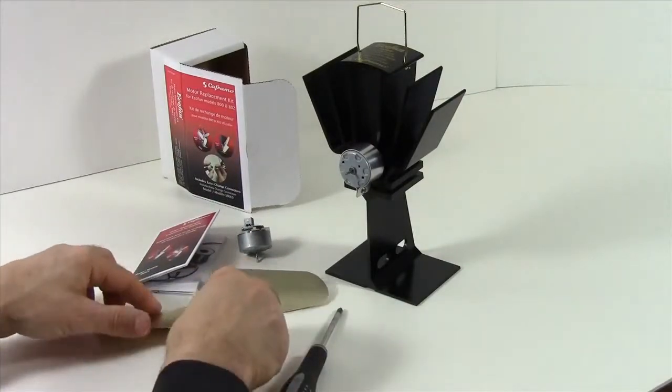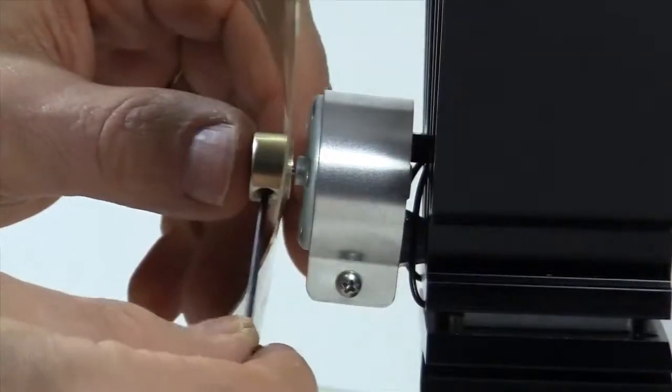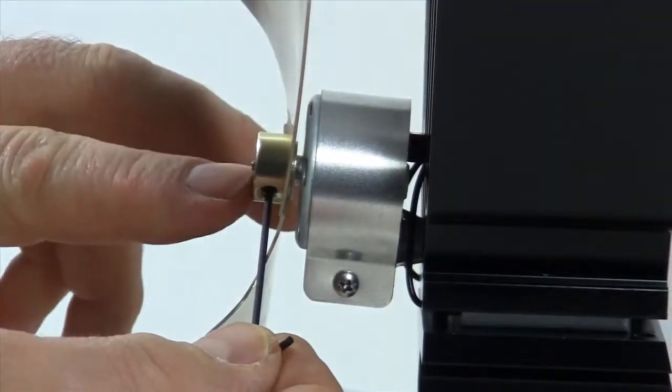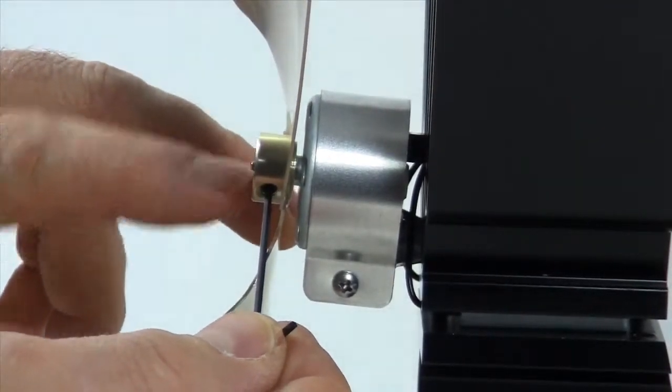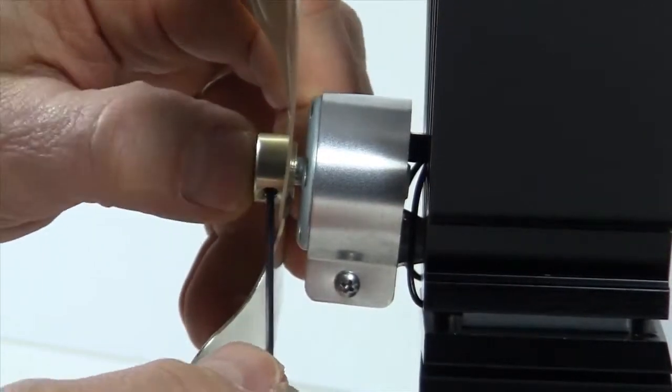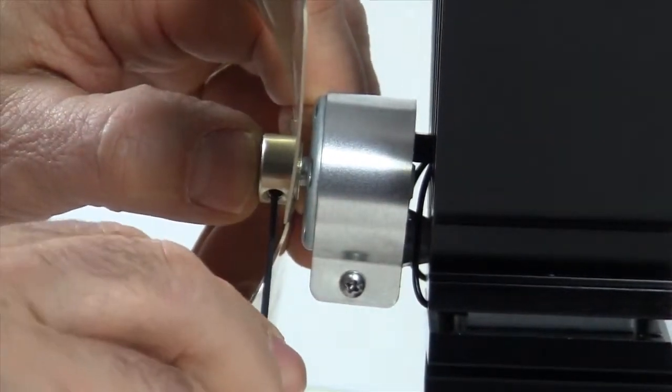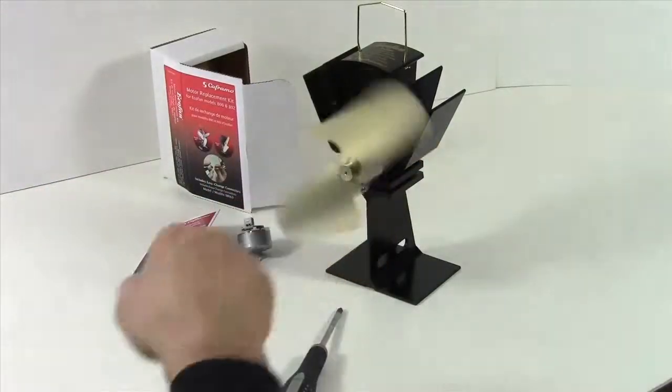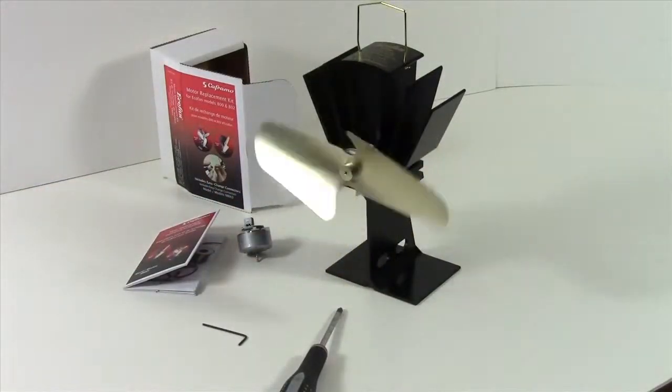The last step will be to replace the blade. We want to make sure that the motor shaft is flush with the front of the blade. Turn the screw clockwise to tighten the blade. And now we have completed our motor replacement.